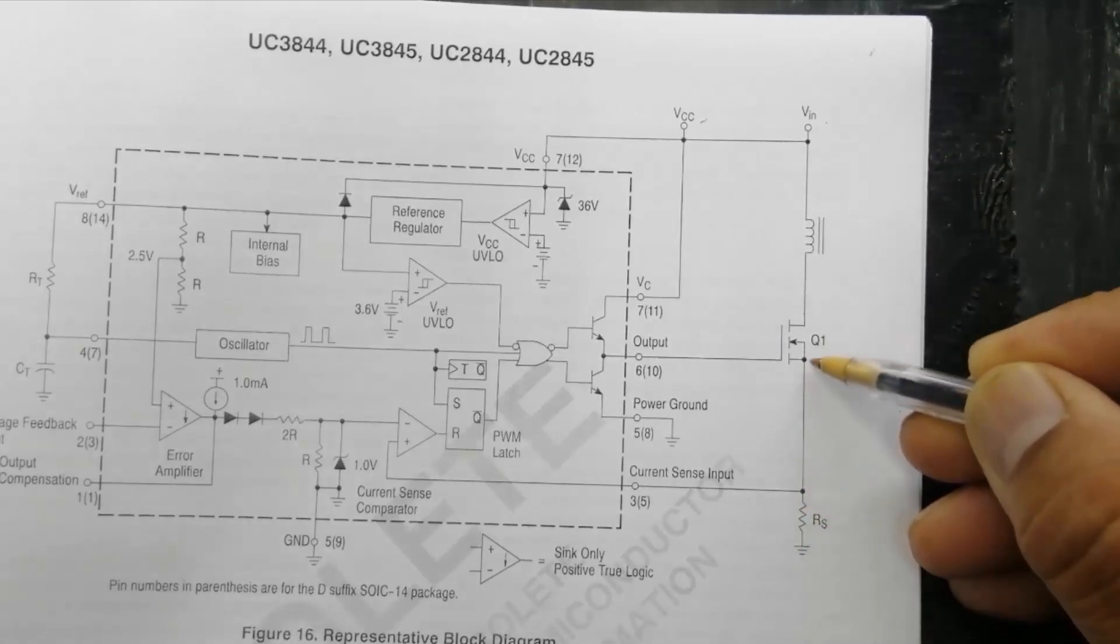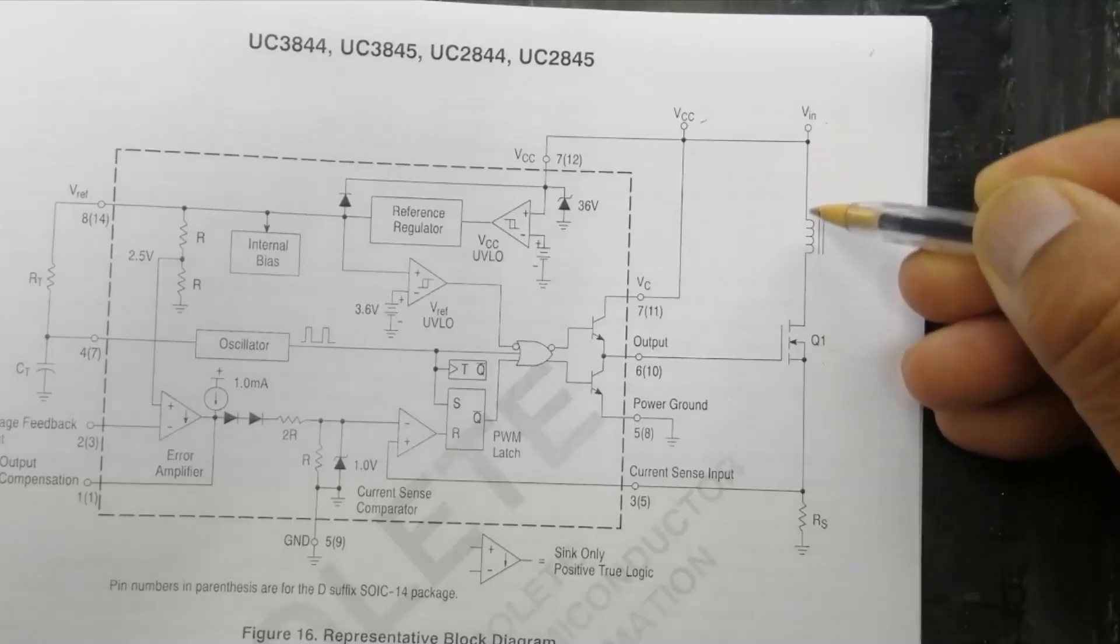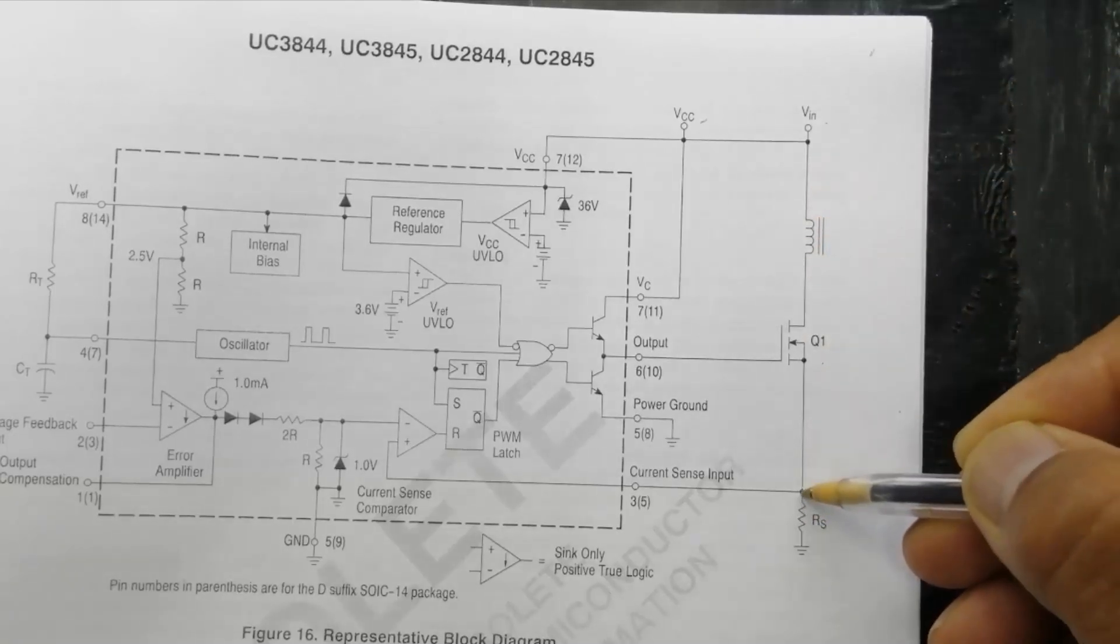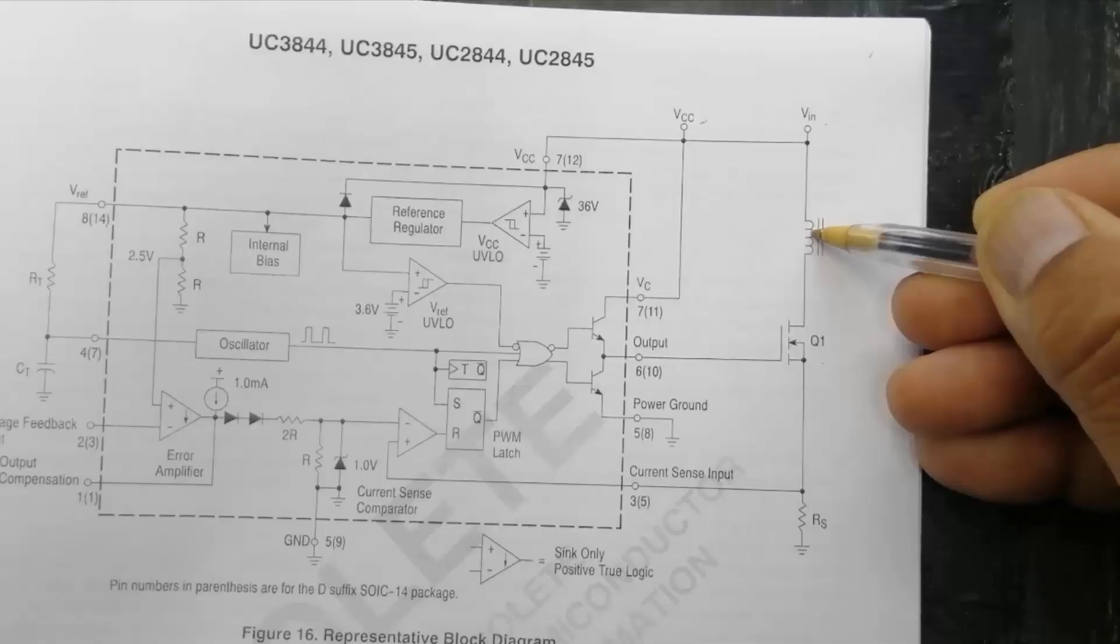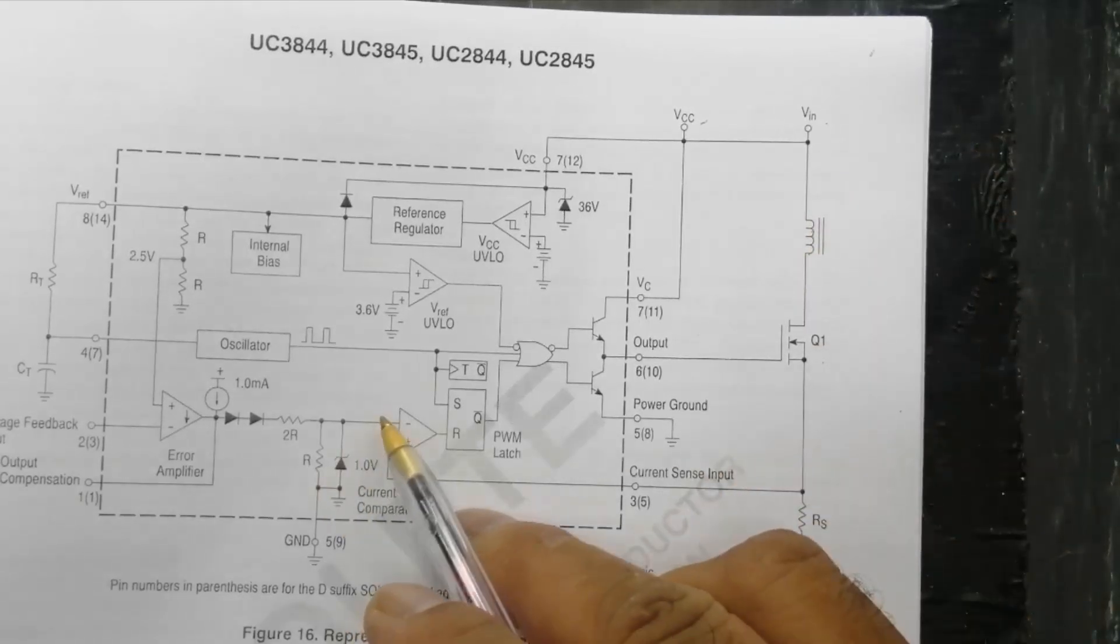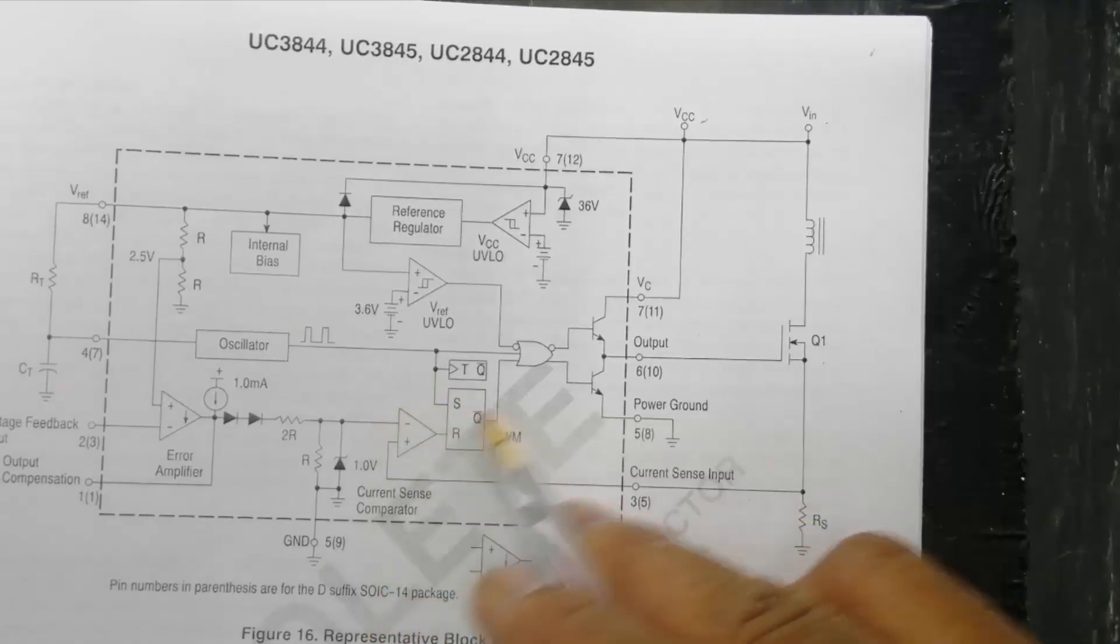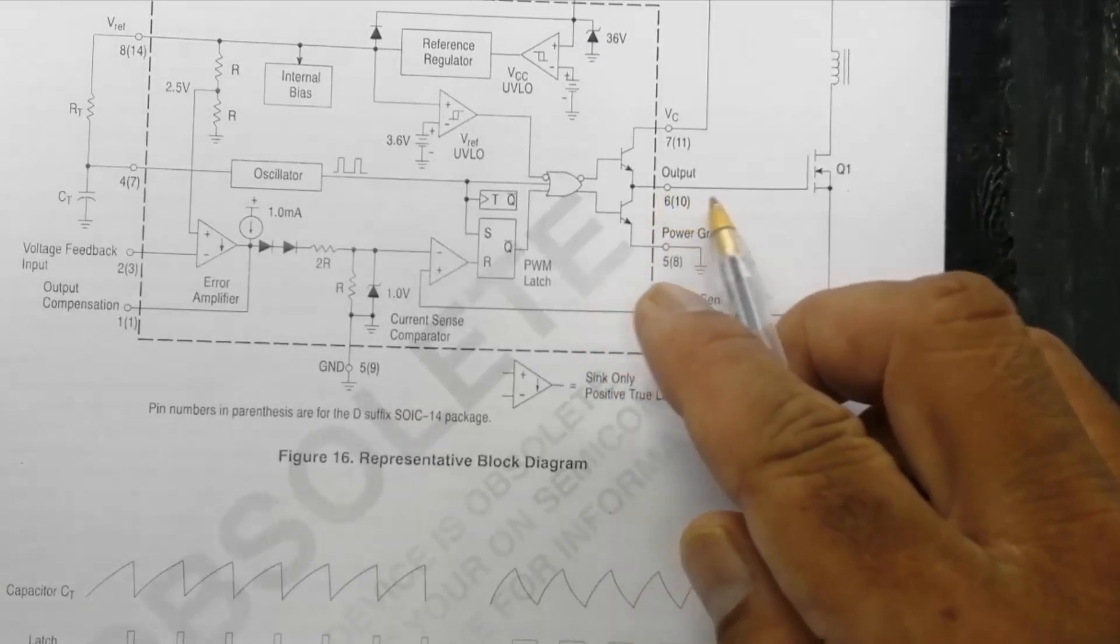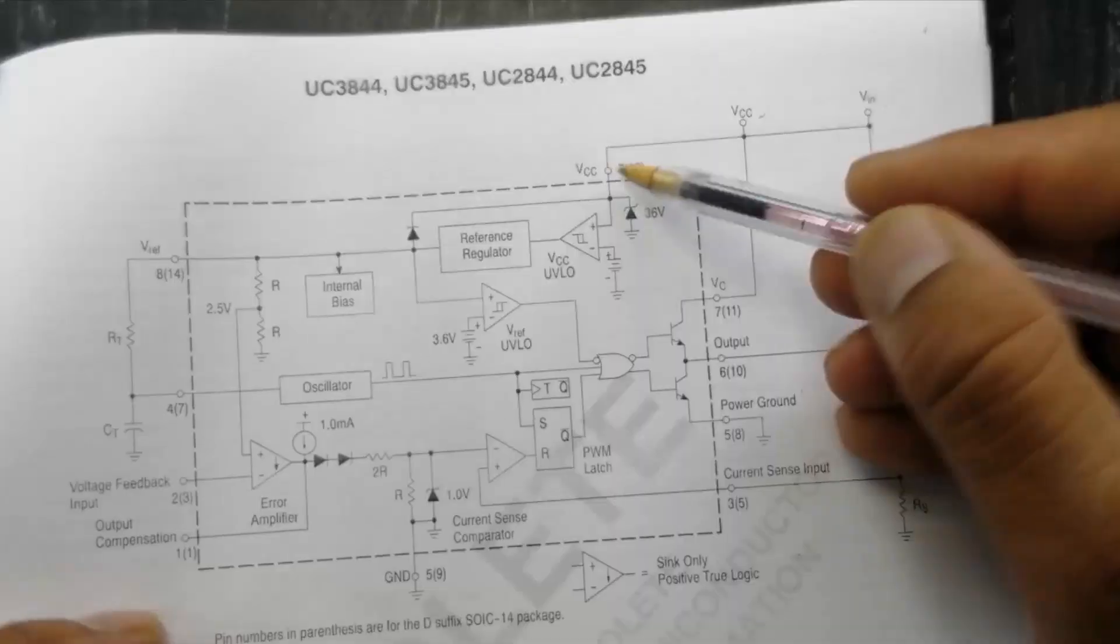Because this resistor is in series, so it will determine how much current is flowing in the primary winding.